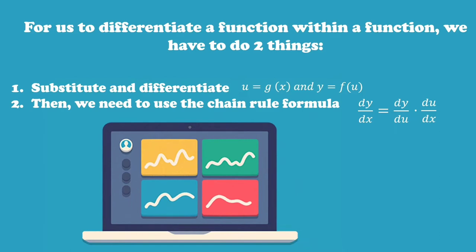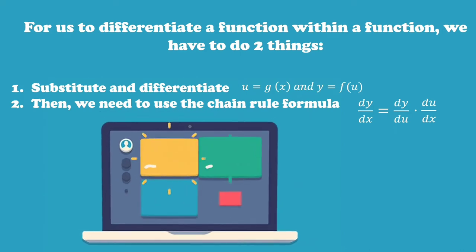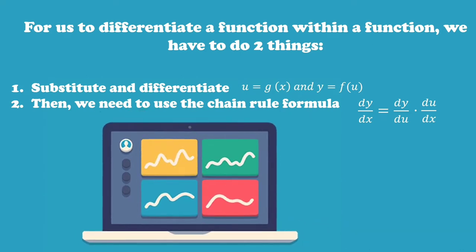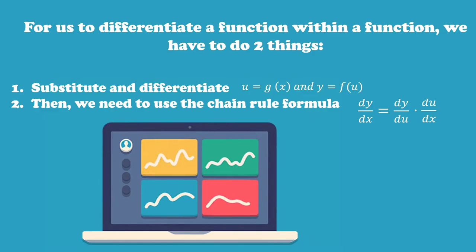To differentiate a function within a function, we have to do two things. First, substitute and differentiate: let u = g(x) and y = f(u). Step 2, we need to use the Chain Rule formula, which is: the derivative of y with respect to x equals the derivative of y with respect to u times the derivative of u with respect to x.